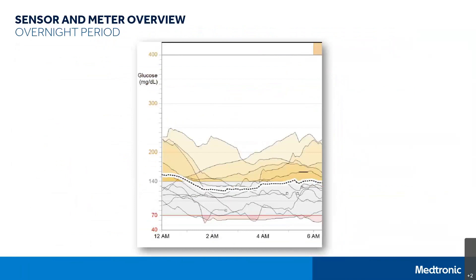Let's look at the overnight period first. It's important to look at this section of the report to see if your basal rates are appropriate. Having the right level set will help you stay more stable at night and reduce the number of times you wake up high or low in the morning. We've zoomed in on the 12 a.m. to 6 a.m. time period. I recommend focusing on the darker shaded areas, as that is where there's a more consistent pattern. The black dotted line is typically the average glucose values. In this example, you can see this person is dealing with some lows at night, as indicated by the areas shaded in pink and red. The darker shaded areas indicating frequent highs or lows should prompt you to talk to your healthcare provider about making basal adjustments at night.